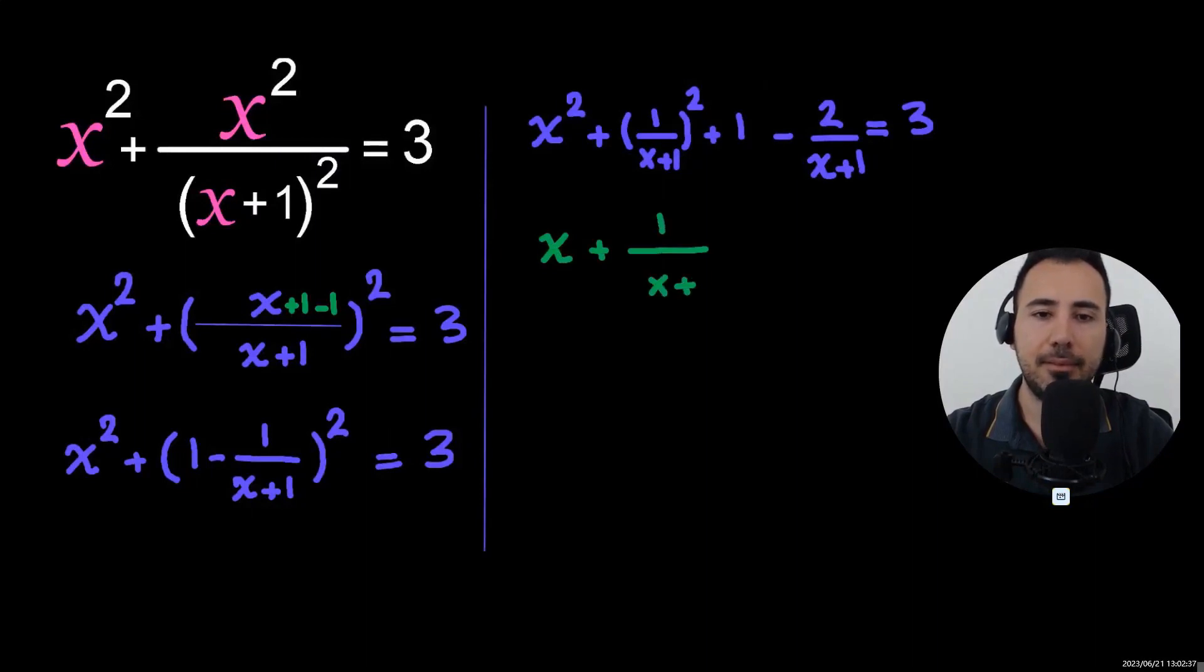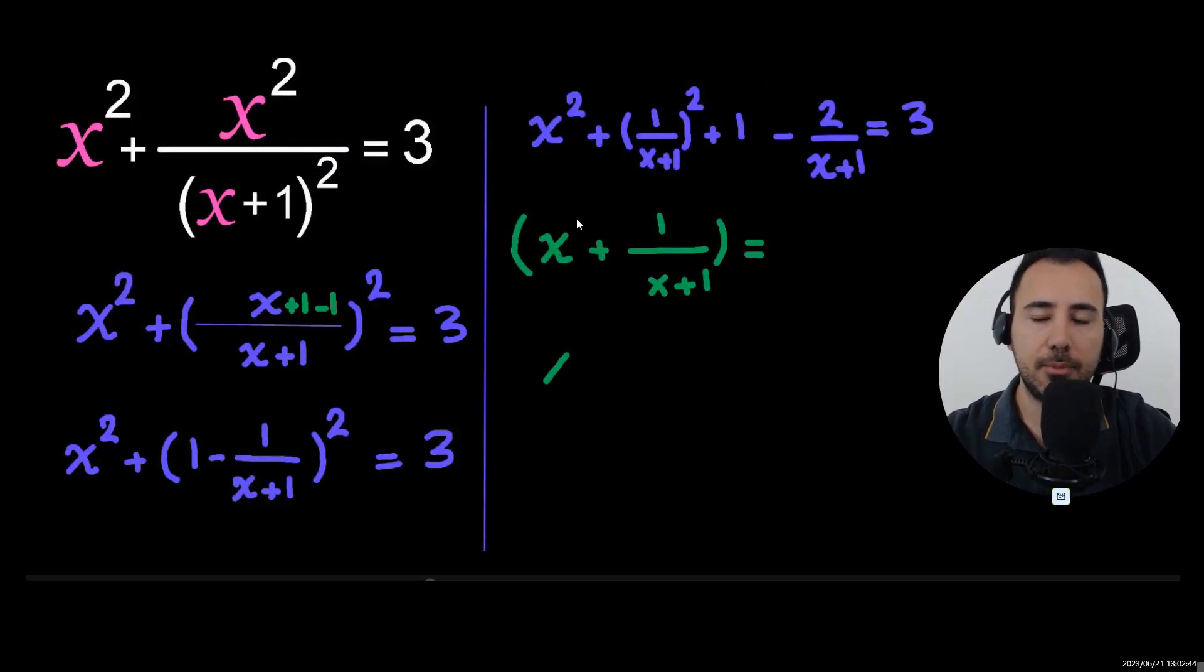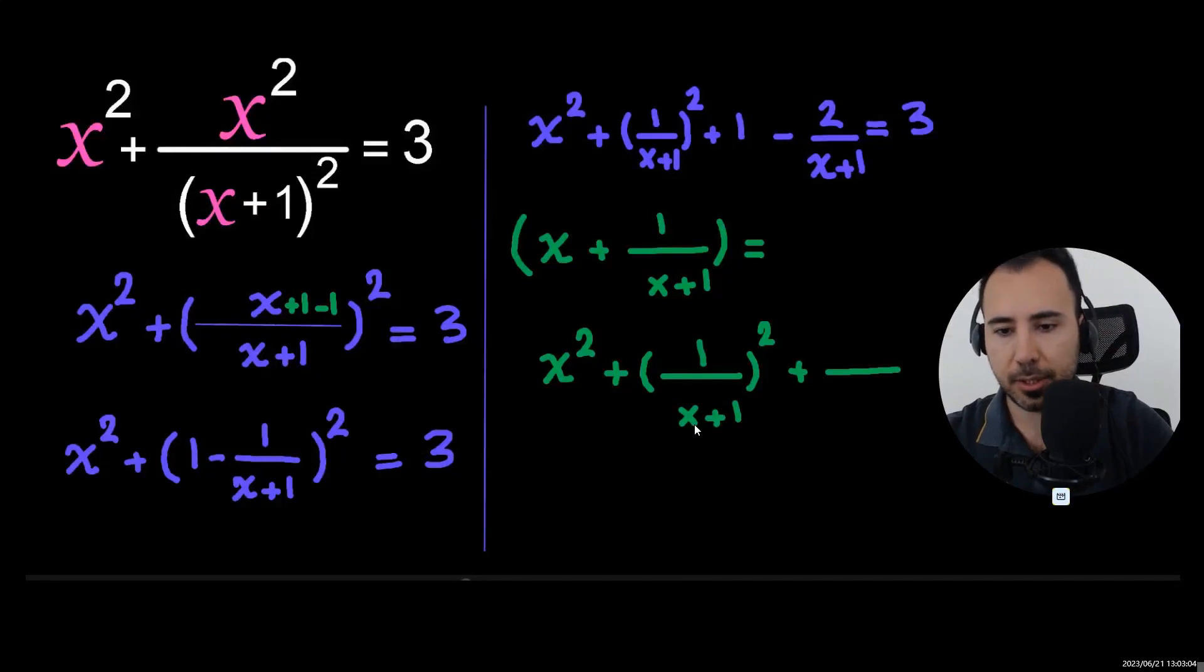Remember, at the beginning of the video, I said we want to write this as a perfect square. So the perfect square that comes to mind is x plus 1 over x plus 1, because we have these terms. So let's expand this and compare the equation in purple and this one. The green one, let me add this to here. I forgot to add it.